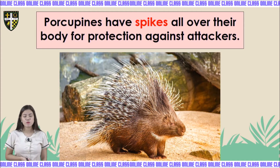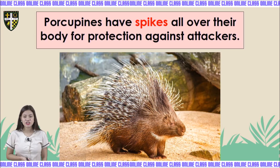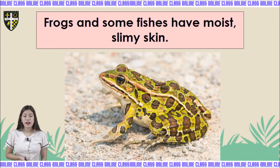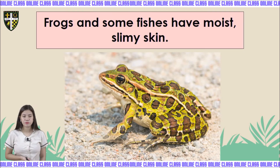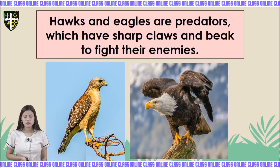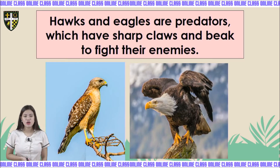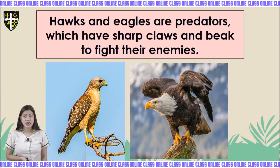Porcupines have spikes all over their body for protection against attackers. Wild frogs and some fish species have moist, slimy skin. Hawks and eagles are called predators, which have sharp claws and beaks to fight their enemies.